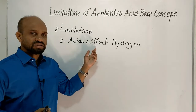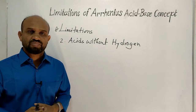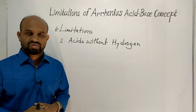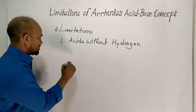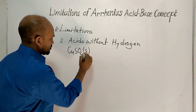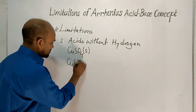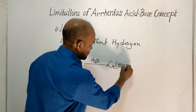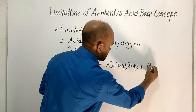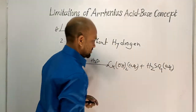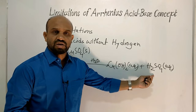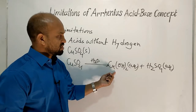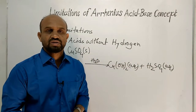The next limitation is acids without hydrogen. There are some compounds that can function as acids even though there are no hydrogen atoms in them. For example, copper sulfate, which is solid at normal conditions — when dissolved in water, copper hydroxide and sulfuric acid are formed. Since sulfuric acid is a strong acid but copper hydroxide is a weak base, the overall nature of the solution becomes acidic.